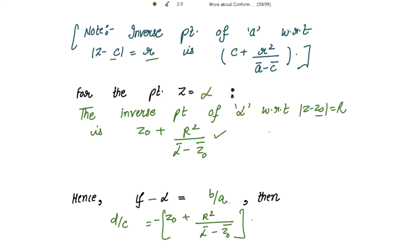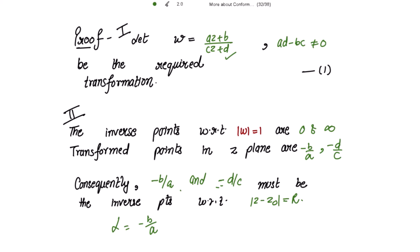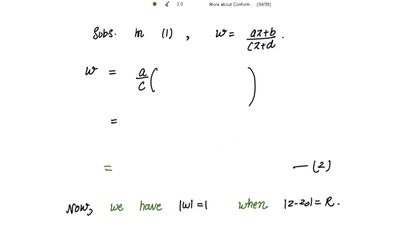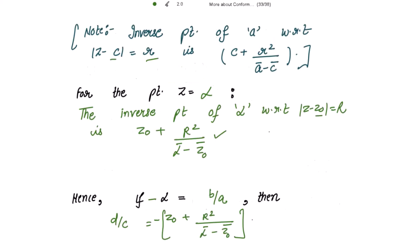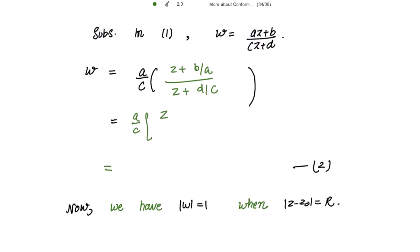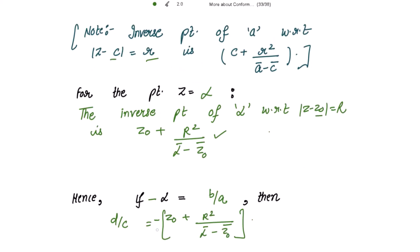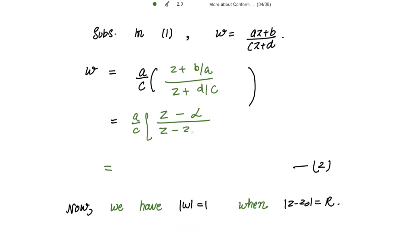Now substituting the values of b/a and d/c back into transformation one: taking a common from the numerator and c from the denominator, w = (a/c) · (z - α) / (z + d/c). The value of d/c is -(z₀ + r² / (ᾱ - z̄₀)), so the denominator becomes z - z₀ - r² / (ᾱ - z̄₀), which simplifies by taking LCM to (z - z₀)(ᾱ - z̄₀) - r².